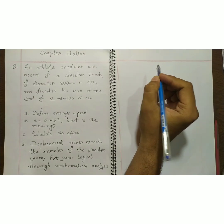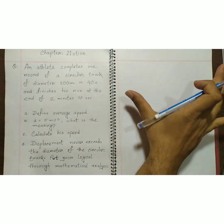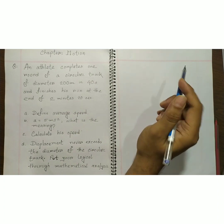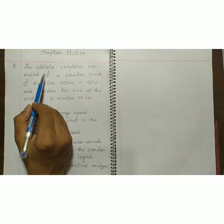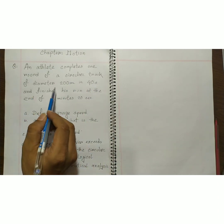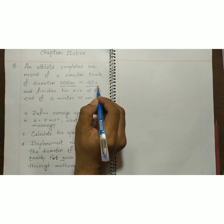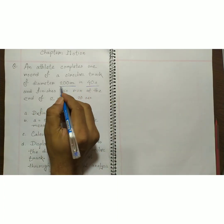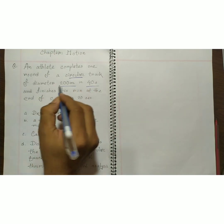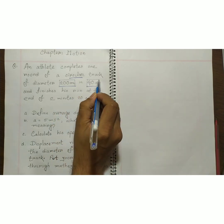I hope each and every one out there is doing great and having good health. In this video I am going to explain another type of creative question from chapter motion. An athlete completes one round of a circular track of diameter 200 meter in 40 seconds.